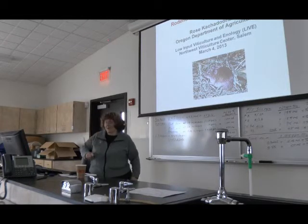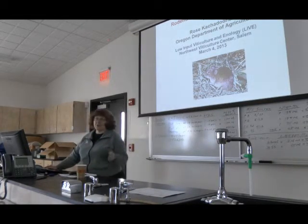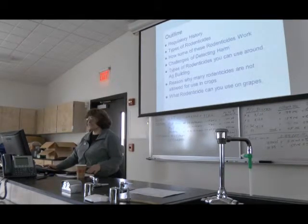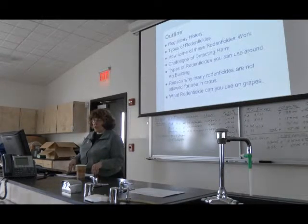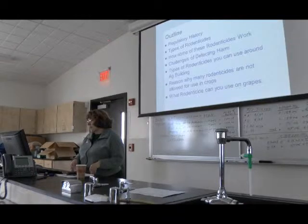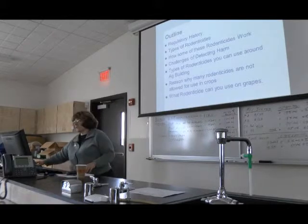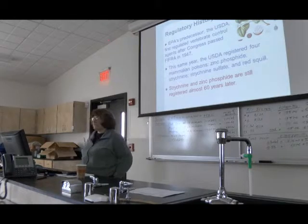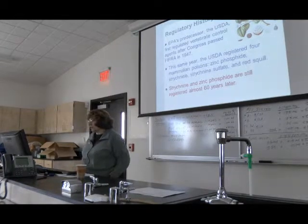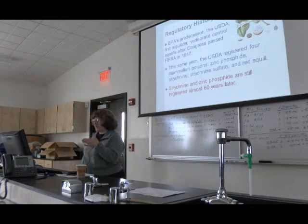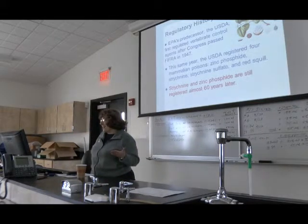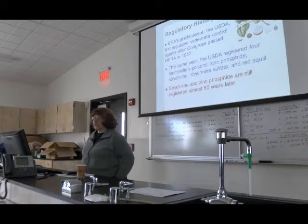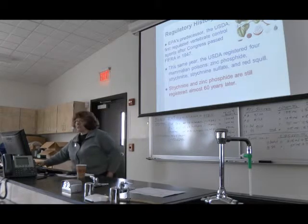So I'm going to be talking about rodenticides and other pesticide risks. I'll cover a little regulatory history, types of rodenticides and how some of them work, challenges in detecting harm from pesticides, rodenticides you might use around agricultural buildings, why you can't use some in your crops, and what rodenticides you can use in grapes. Just a brief regulatory history: EPA's predecessor, the USDA, first regulated vertebrate control agents after Congress passed FIFRA in 1947. This was when EPA first registered zinc phosphide — which we still use today — strychnine, which is still legal, and something called red squill, which is not. Here it is 60 years later and we're still using some of these products.